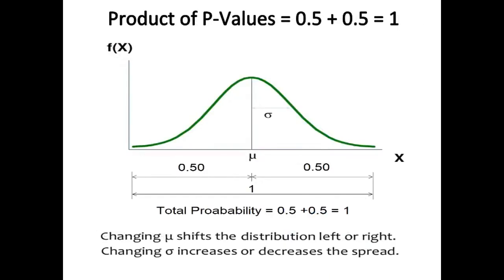The overall probability value or p-value is 1 by adding left and right side probabilities, which are 0.5 and 0.5 respectively. Changing mu shifts the distribution left or right, while changing sigma increases or decreases the spread.